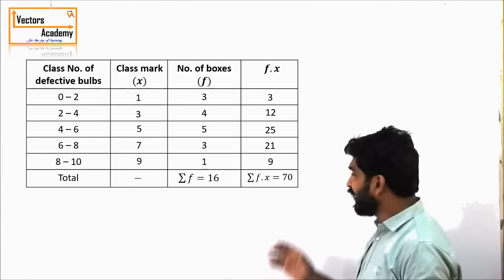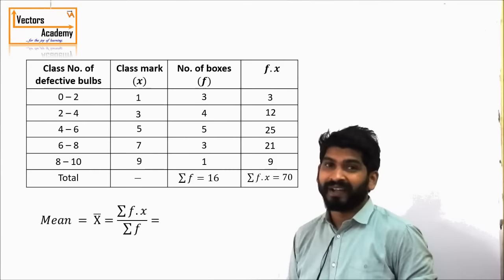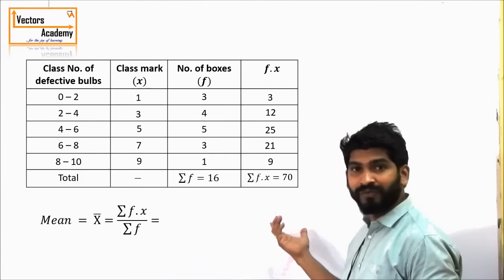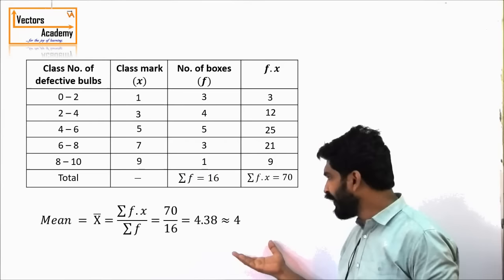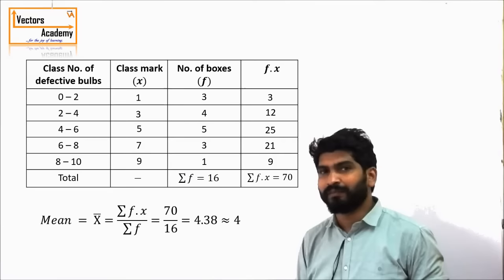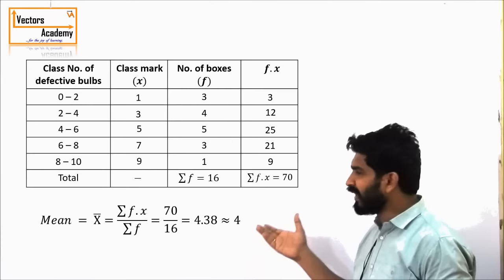Once we get the column of F × X and the total number of boxes, we simply divide to calculate the mean. The mean is calculated by the summation of F × X — the total number of defective bulbs — divided by the total number of boxes, and that comes out to be 4.38. The average number of defective bulbs cannot be in decimals, so we round it up and say there are on average 4 defective bulbs in all these boxes.